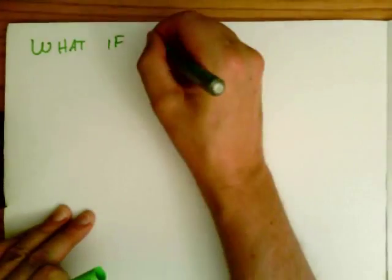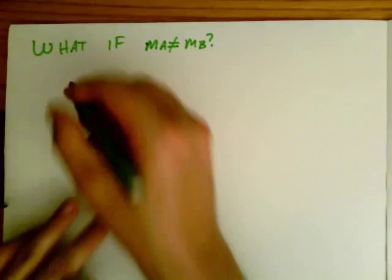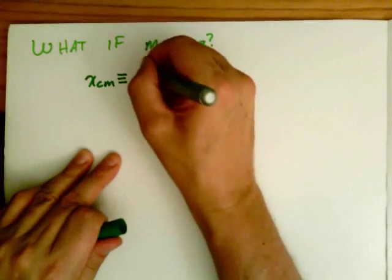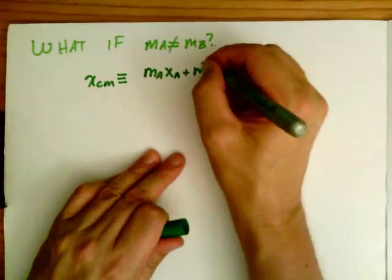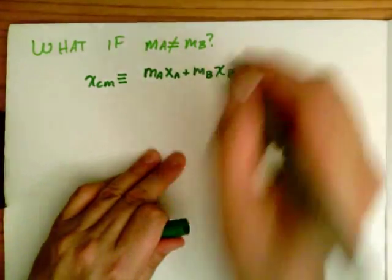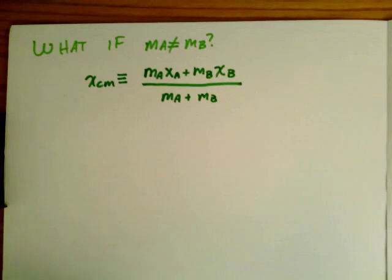Now what if the mass of A is not equal to the mass of B? What is center of mass then? Well the position of the center of mass is defined as the weighted average. So mA xA plus mB xB divided by the mass of the system, which is just mA plus mB. That's my definition: weighted average position.